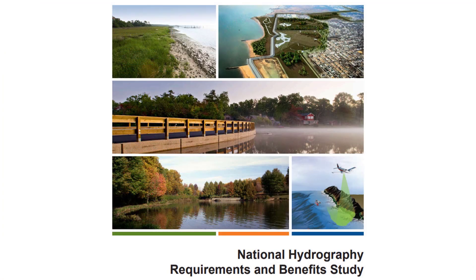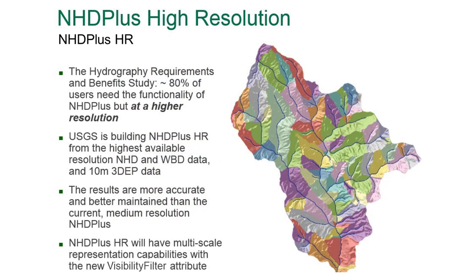The Hydrography Requirements and Benefits study found that approximately 80% of users need the functionality of NHD Plus but at a higher resolution. USGS is building NHD Plus HR from the highest available resolution NHD and WBD data and 10-meter DEMs from 3DEP, much of which is now being derived from high-resolution LiDAR data. The results are more accurate and the data used to make NHD Plus HR are actively maintained with the assistance of local authoritative sources.